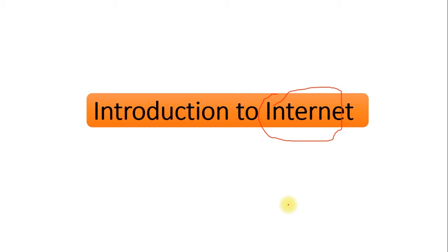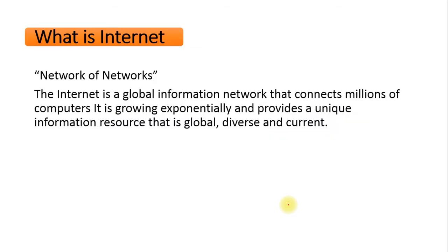First of all, what is the internet? In simple terms, the internet can be defined as a network of networks, which means it is an interconnection of millions of computers to one another. These computers are connected using various protocols — that is, following various rules to facilitate communication with other persons or other computers.